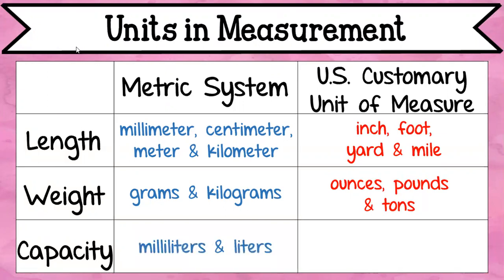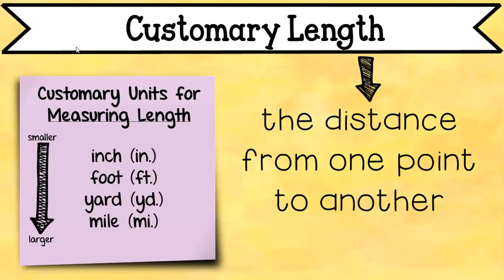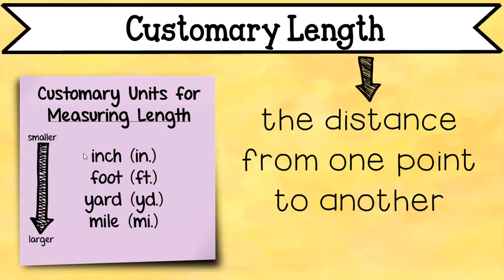For capacity in the metric system, you have milliliters and liters. For customary measurement, you have cups, pints, quarts, and gallons. Starting with length, if you look over here on this post-it note, it has a good diagram for you — an arrow where you start from smallest and go to larger. When we're talking about customary units today, we're not talking about metric. We're going to focus on customary.